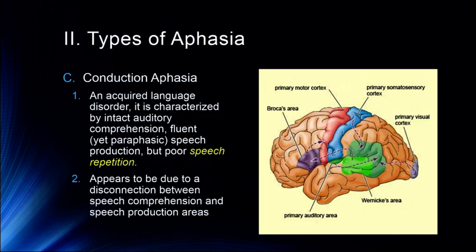Conduction aphasia is an acquired language disorder characterized by intact auditory comprehension and fluent yet paraphasic speech production, but poor speech repetition. Essentially, we have a disconnection between Wernicke's area and Broca's area — that's why it's called conduction aphasia, because information can't be conducted from Wernicke's area to Broca's area. Speech comprehension is intact and we can create our own speech, but we can't repeat what somebody says back to us. This tells us there is an area for comprehension, an area for production, and connections between the two that can cause different types of disruption.